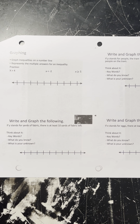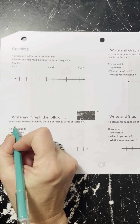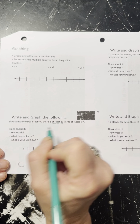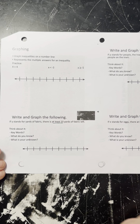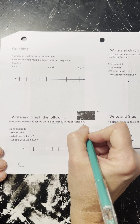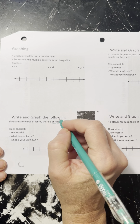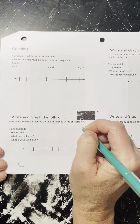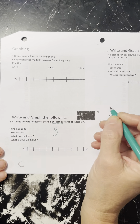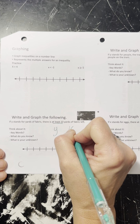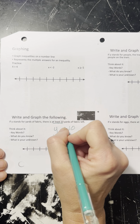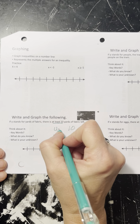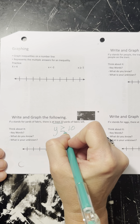Writing and graphing the following. If y stands for the yards of fabric, there are at least 10 yards of fabric. We're just writing a quick little inequality. At least 10 yards means y, our yards of fabric, has to be at least 10 yards. We want 10, 11, 12 yards — so this amount has to be greater than or equal to 10. If we put that on a number line, I'll put my 10 right here, and the greater than or equal to is going to be a closed dot shaded to the right.